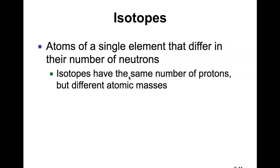Now, what happens when you start to change the number of subatomic particles in an atom? Well, one of the things that you could change is the number of neutrons. And atoms of a single element that are going to differ in their number of neutrons are called isotopes.